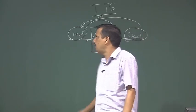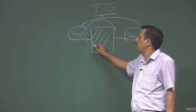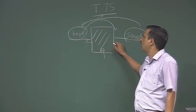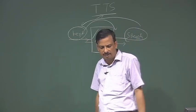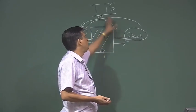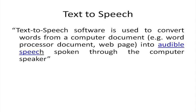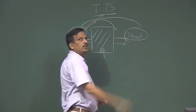If I want a system or a machine or an algorithm that will take input text and convert it to speech, all kinds of text processing and signal processing are required for development of TTS. TTS is defined as software used to convert words or sentences from a computer document into audible speech spoken through computer speakers. So TTS is nothing but an application where input is text and output is speech.